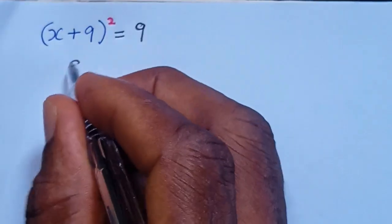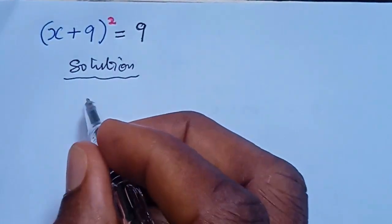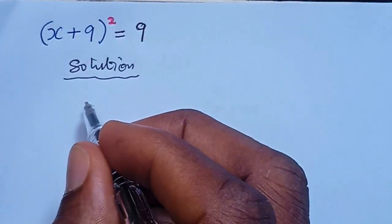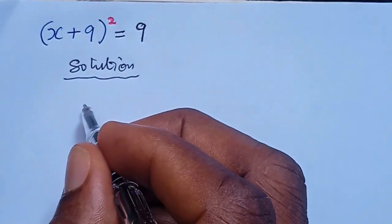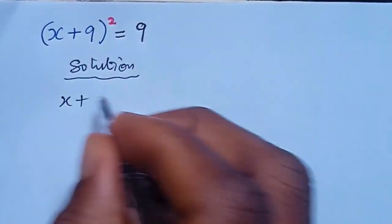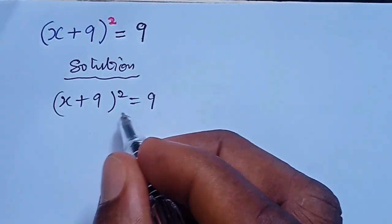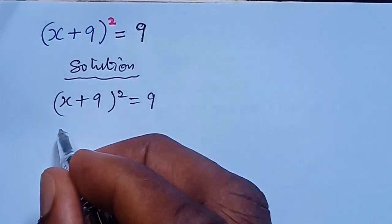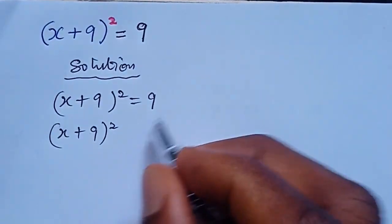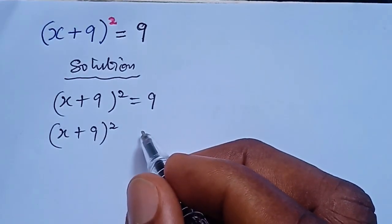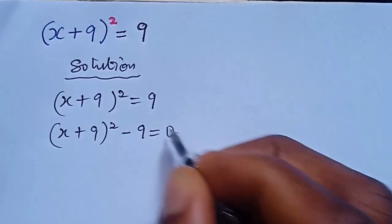We use two approaches to solve for x. From our first method, we have our question. From here, we bring this x plus 9 in bracket to the power of 2. We bring this 9 to the left hand side, so we have minus 9 equal to 0.